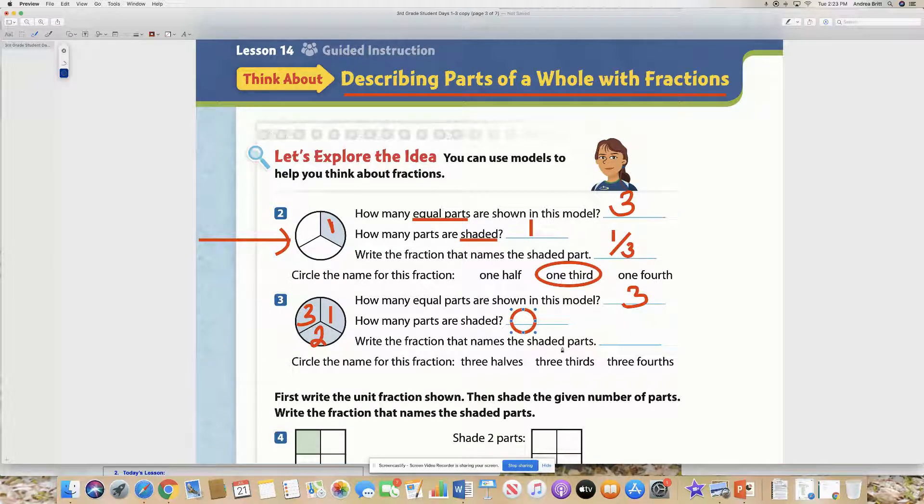Write the fraction that names the shaded parts. If there are three altogether and all three are shaded, then the fraction that names that is three-thirds.